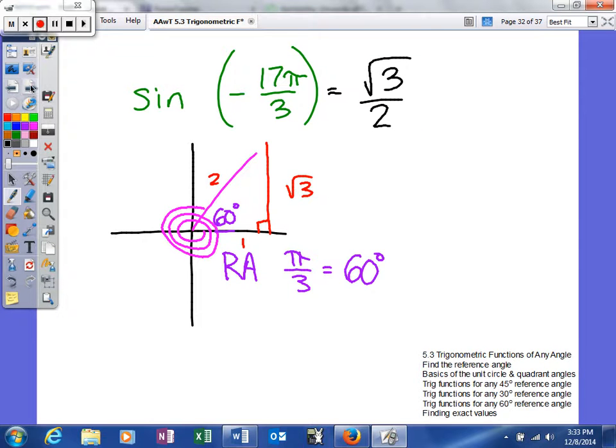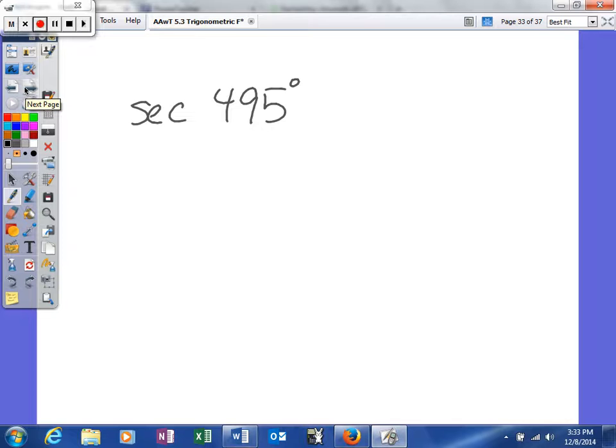One more example. Here, it's the secant of 495 degrees. So we'll do the exact same stuff. This time it is in degrees, so it might be a little bit easier for some people. It's a positive angle again, so we're going to rotate counterclockwise.